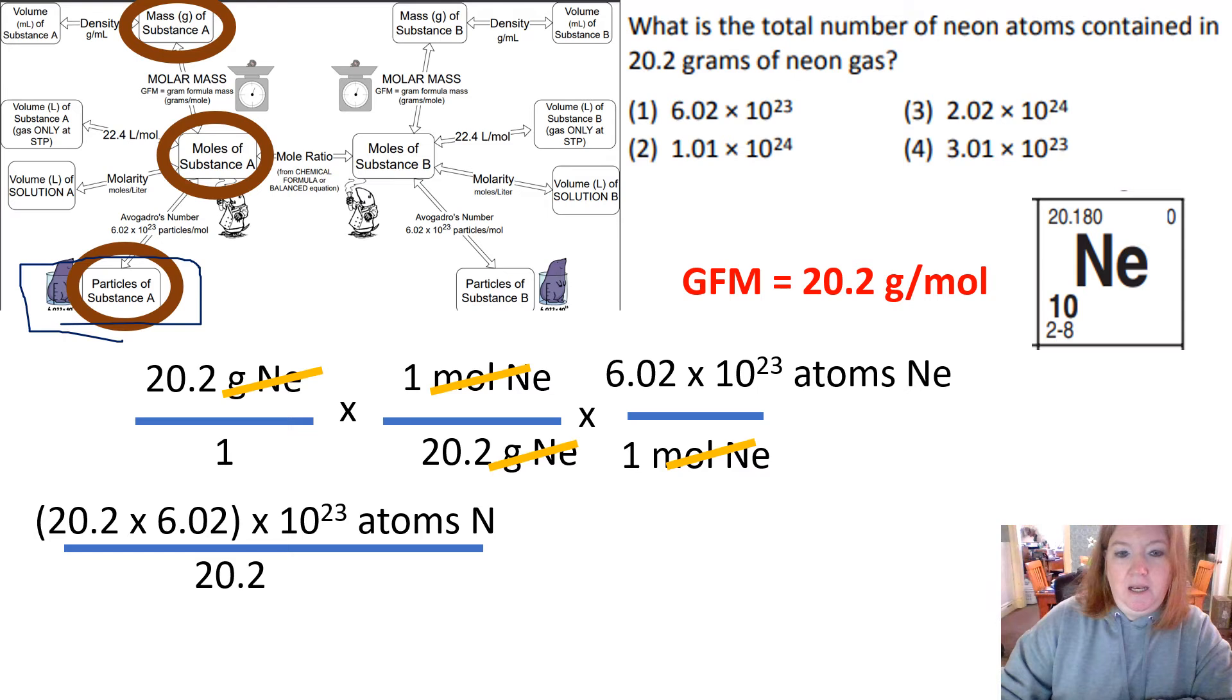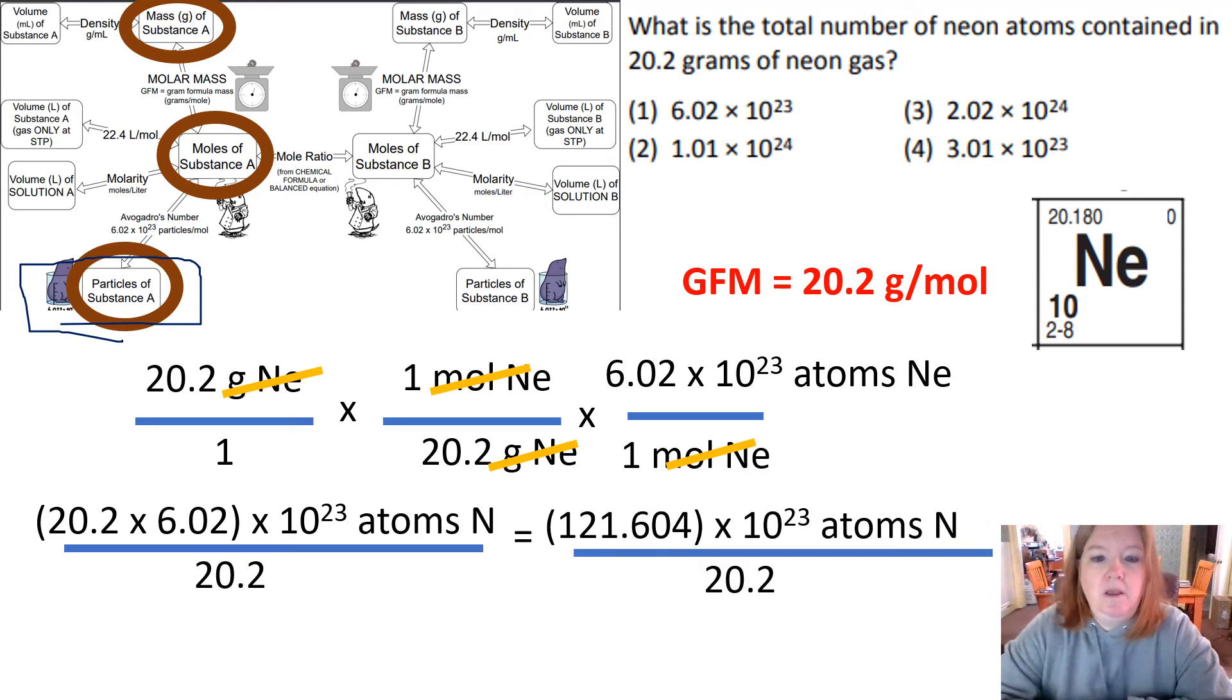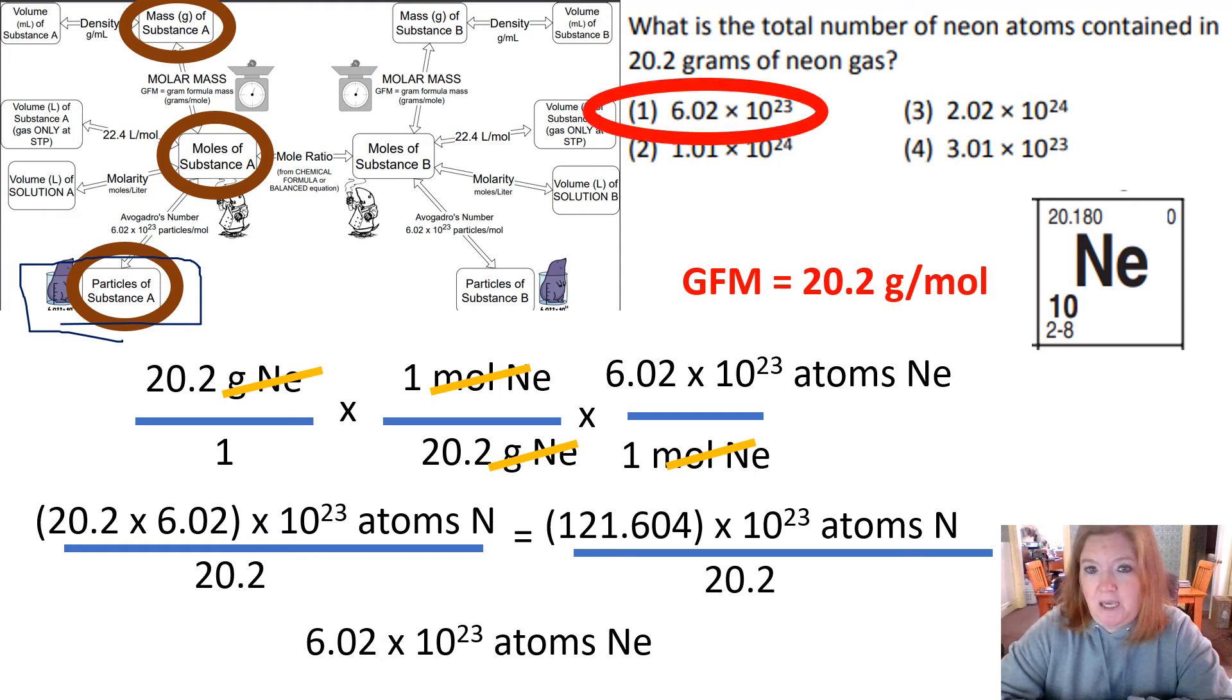So what do I do now? I multiply what's on the top, and then I'm going to divide by what's on the bottom. And so I multiply across the top, divide by what's on the bottom, I got that.